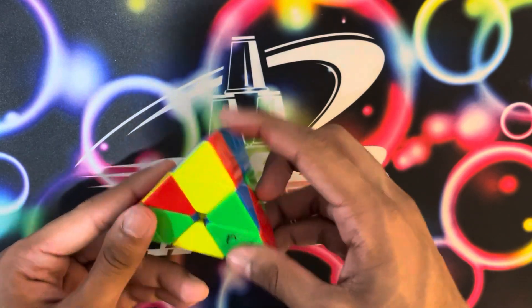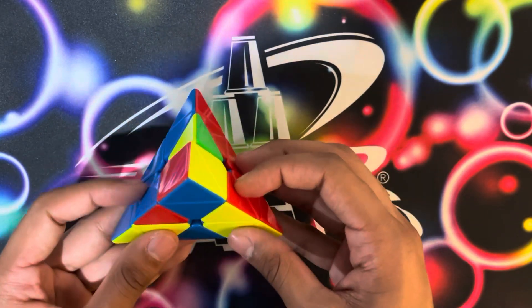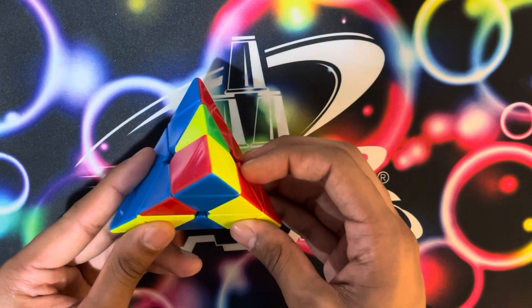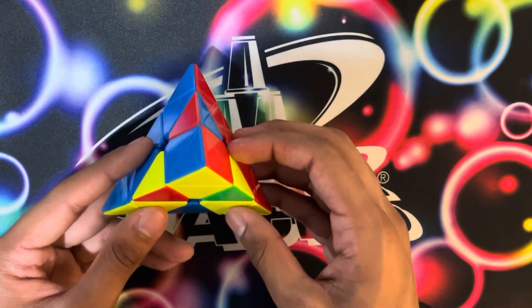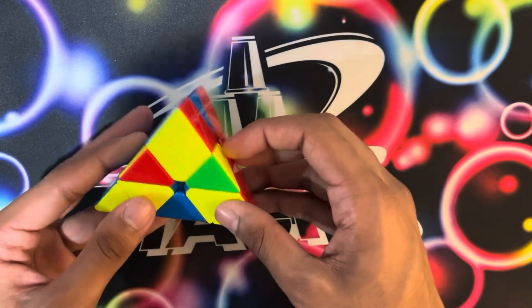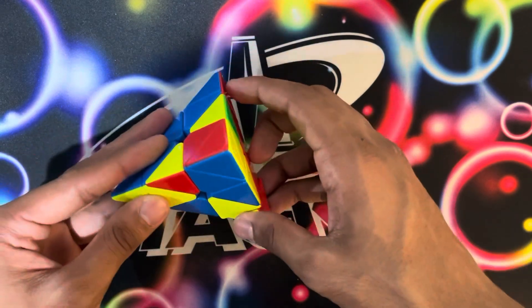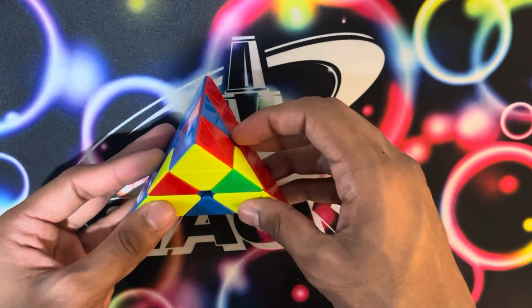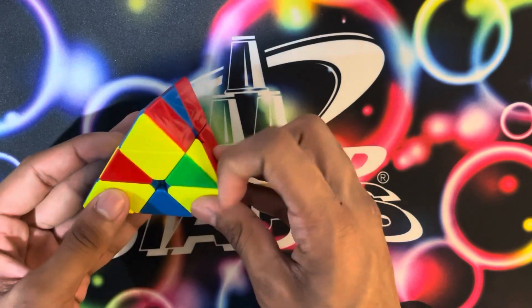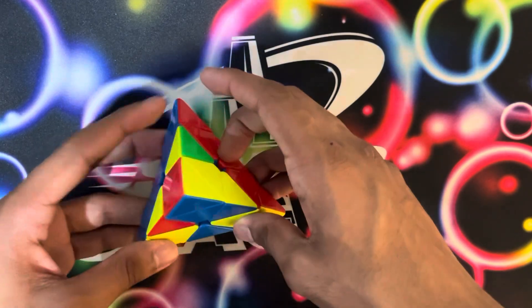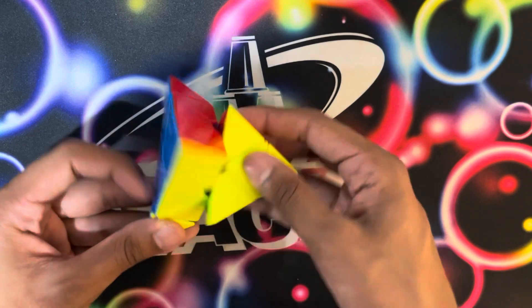So the solution that you did was good. However, the way you finger-tricked your L4E algorithm was kind of questionable. So the first move when you started like that, that's not terrible. I do that sometimes. However, after that, it kind of looked like you were just flicking from the back.